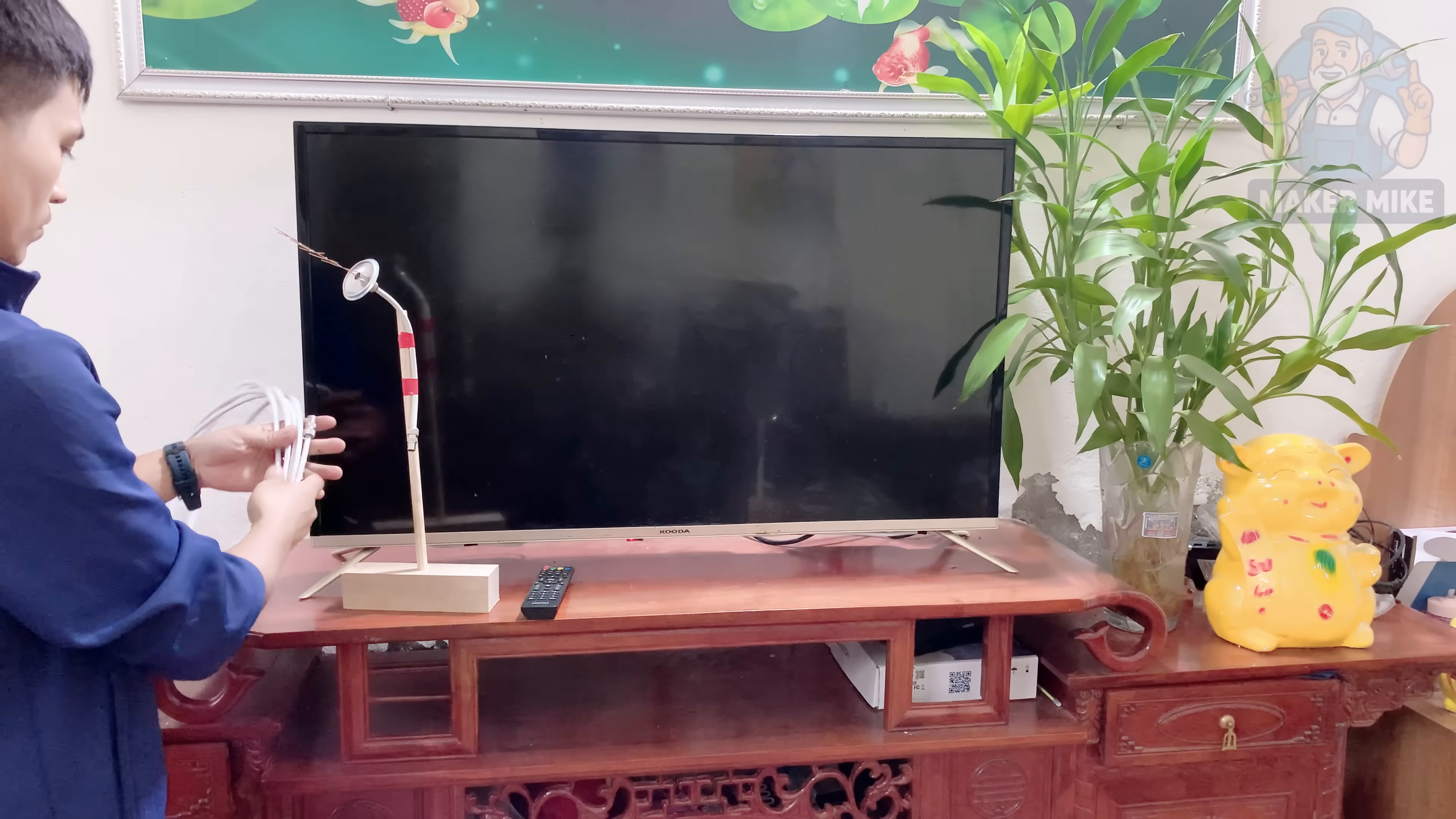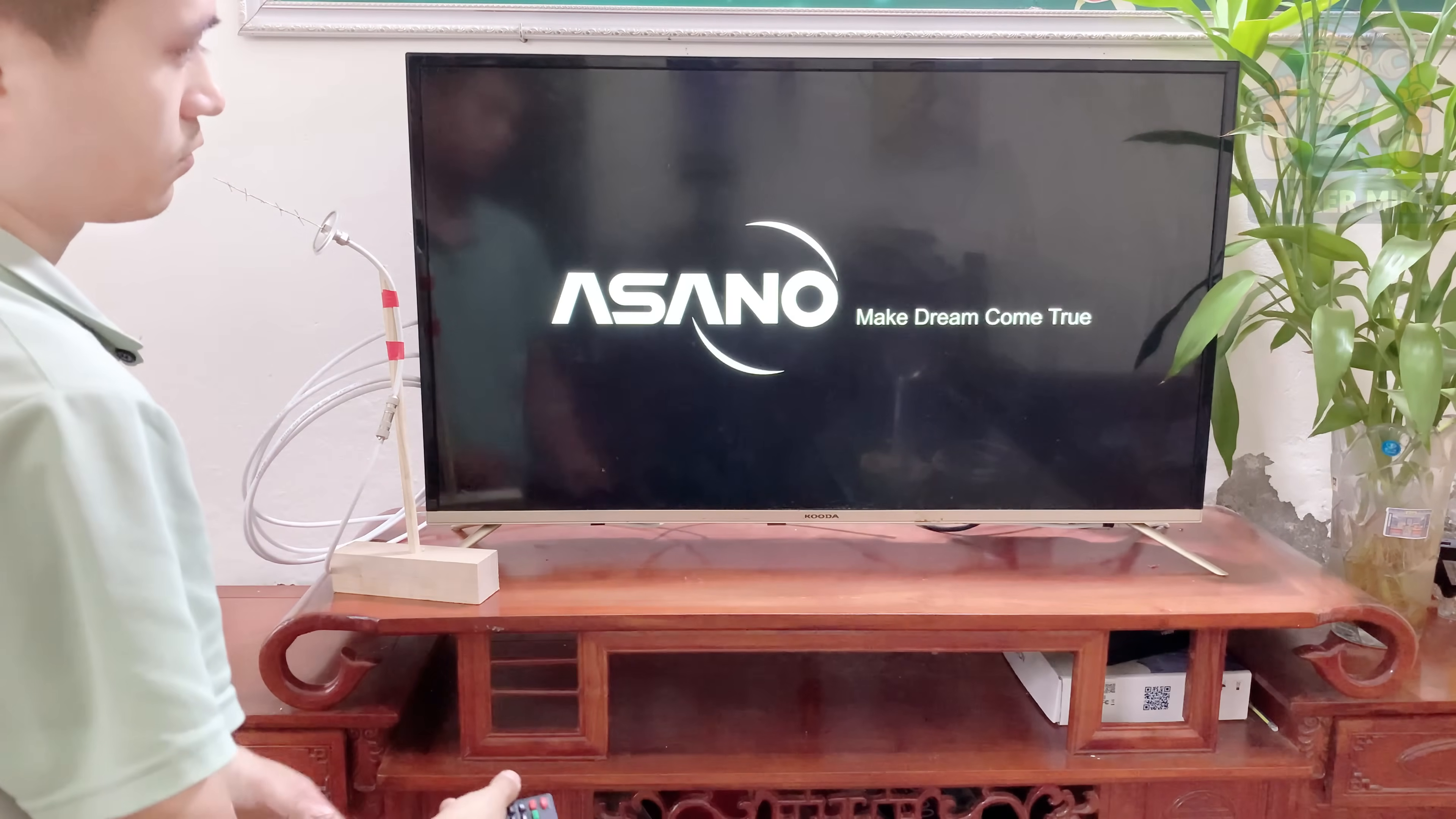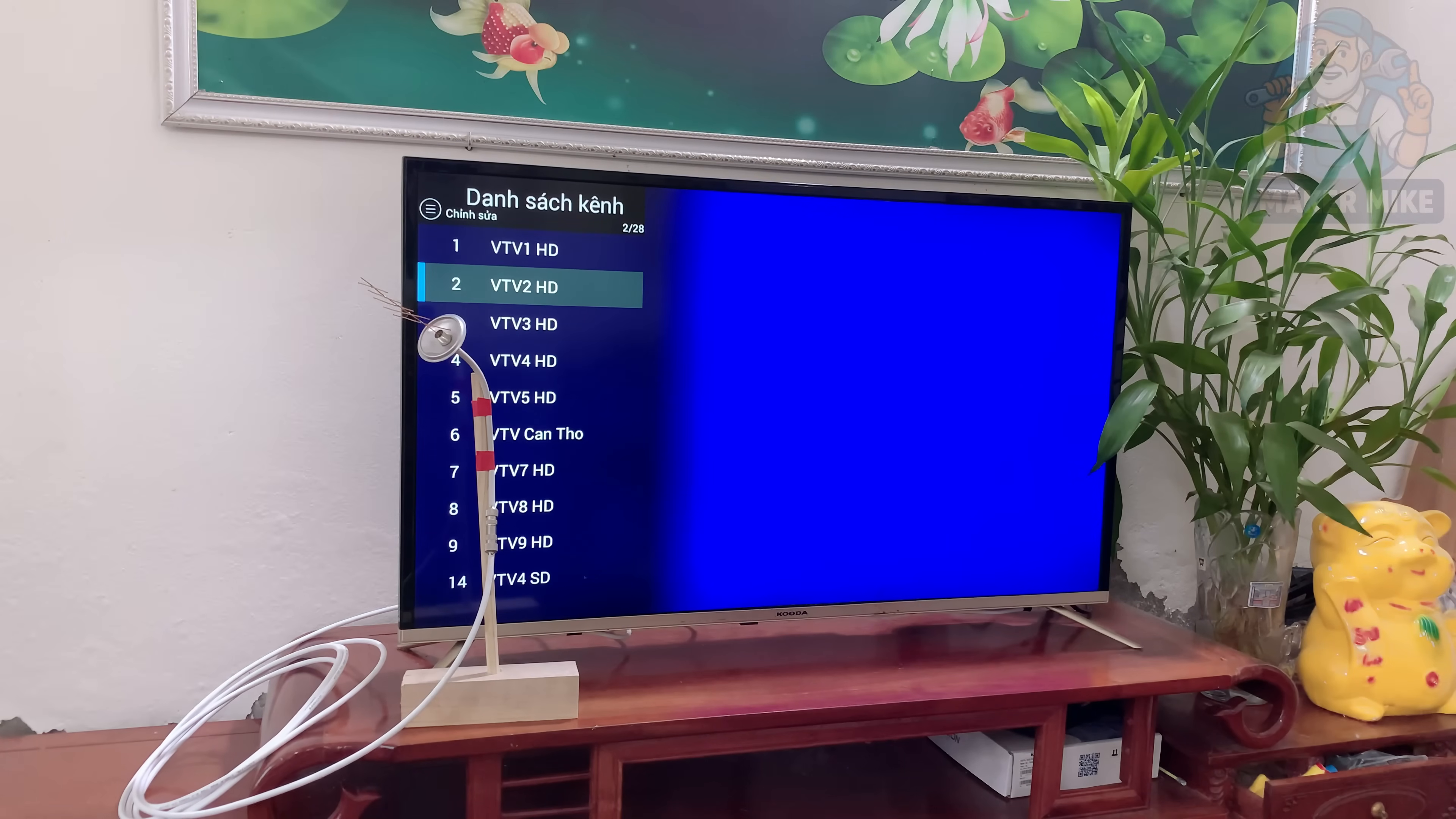Now for the moment of truth, plug your antenna cable into the TV's antenna port and turn the set on. Go to your TV's settings and start the auto scan or channel search. Give it a minute to run and you'll start to see those local channels pop up one by one. Not bad for something made from a soda can and a few spare parts, right? Clear signal zero cost, that's the kind of DIY win we love to see.